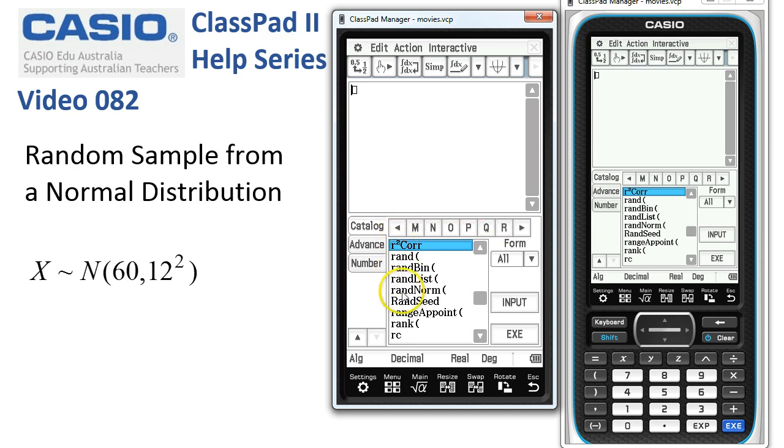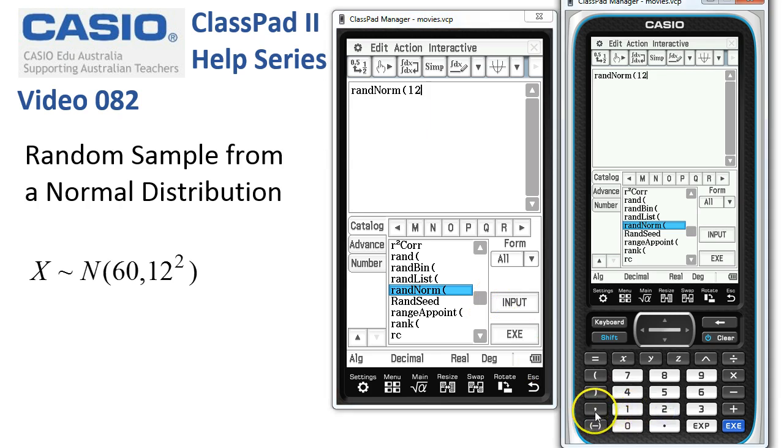And here we go, there's the random normal. So if I tap that one in and enter the two parameters, standard deviation first, 12, and the mean second, 60, and tap Execute, you'll notice a single sample has been selected.